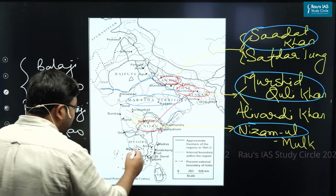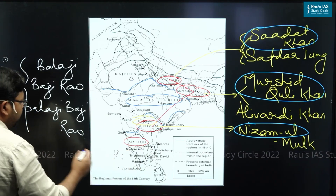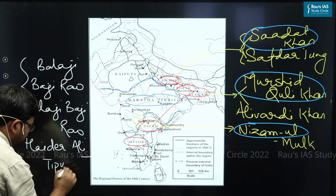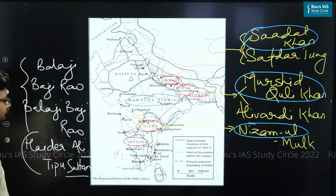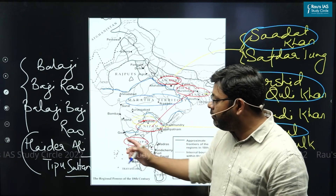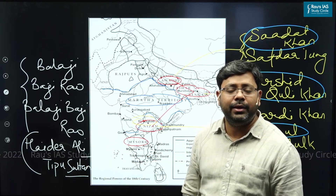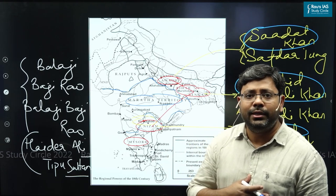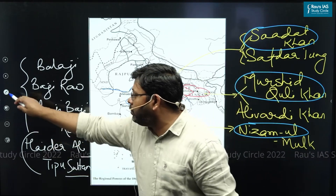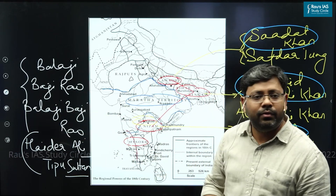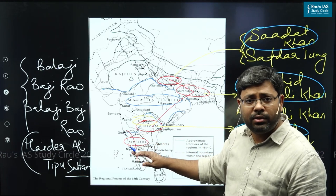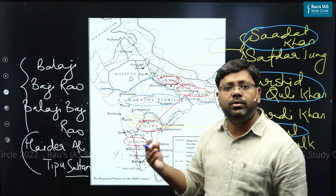Another very prominent power in the South was Mysore, which became prominent under the rule of Haidar Ali and his son Tipu Sultan. Both were excellent military commanders with excellent knowledge of contemporary geopolitics, and that is why Mysore gave very tough resistance to the British East India Company. Conceptually for UPSC, the geographic location of Mysore was such that it would obstruct the spice trade of South and Malabar for the British. That is why the British always looked for control over this area, as the rise of Mysore was obstructing their spice trade.